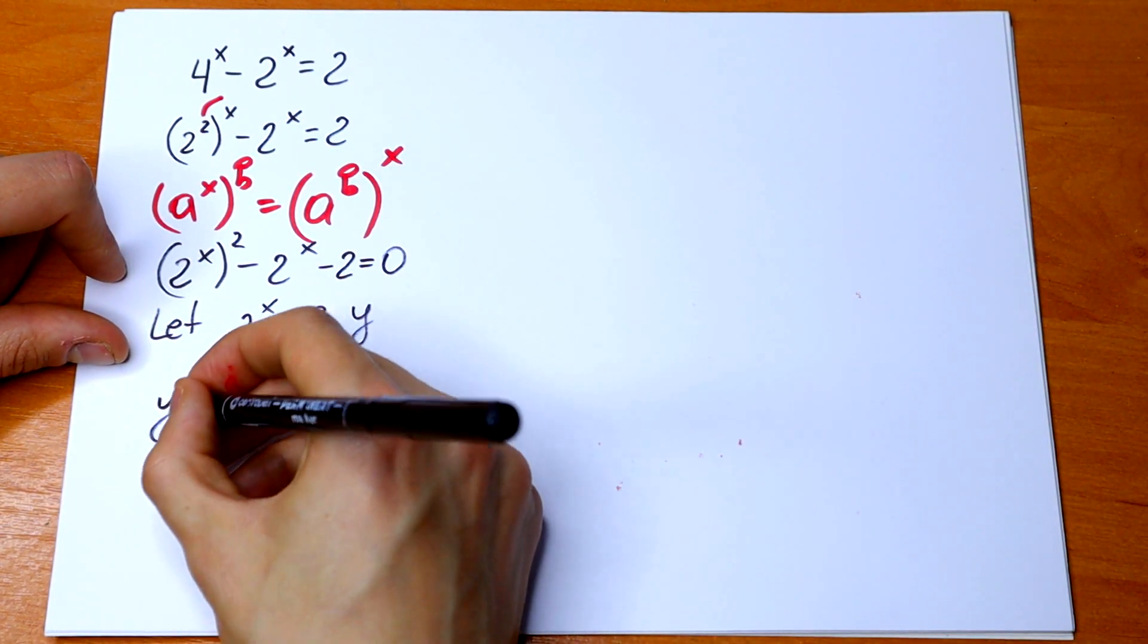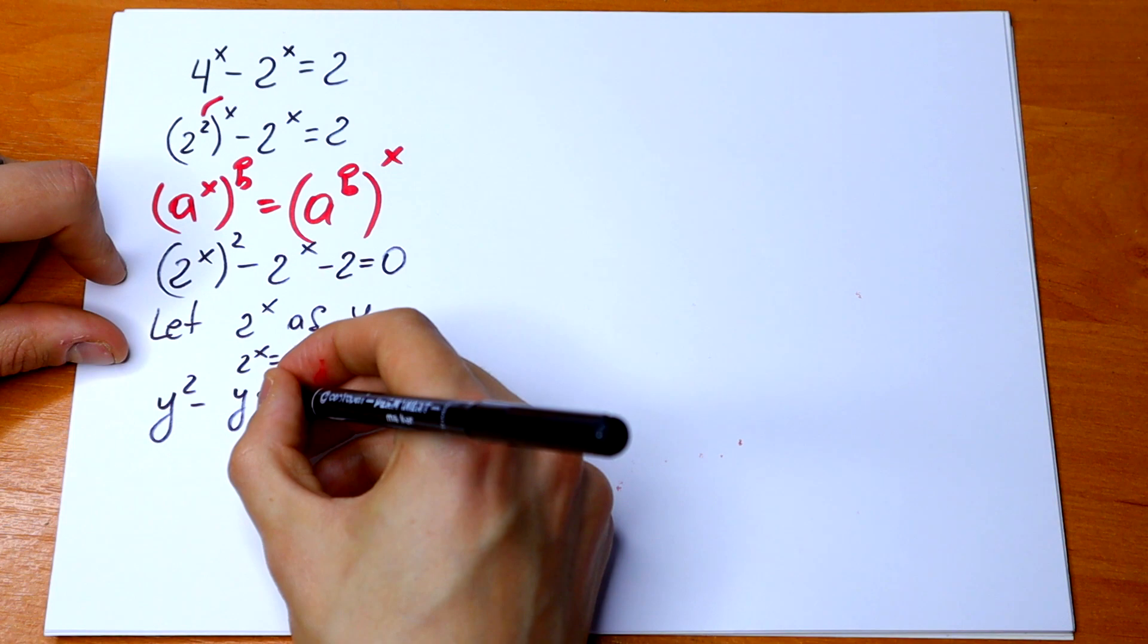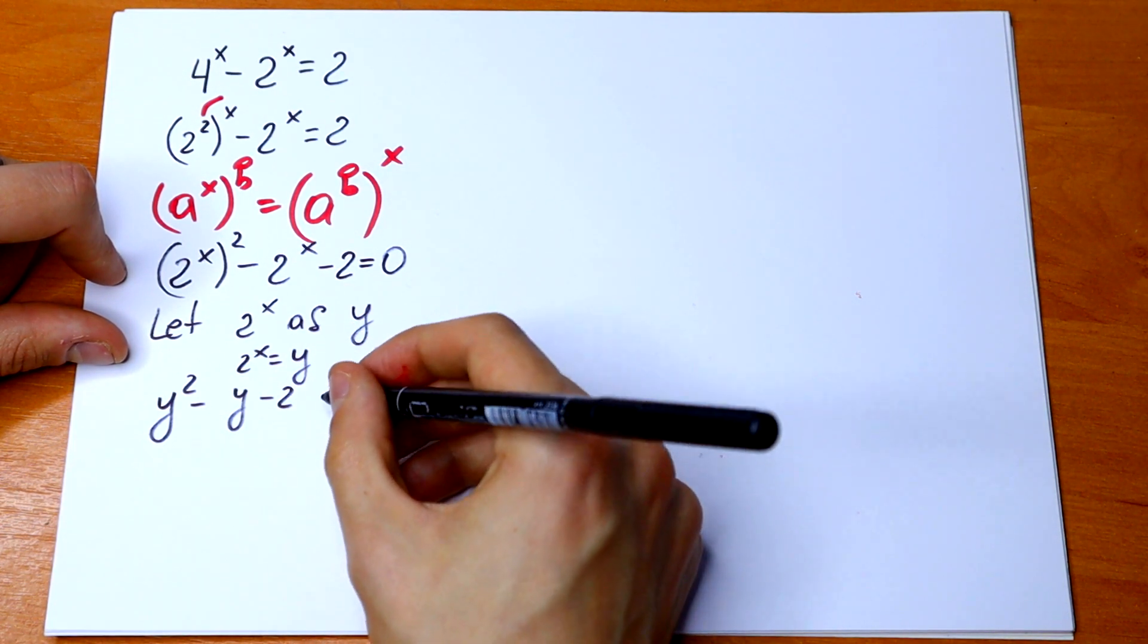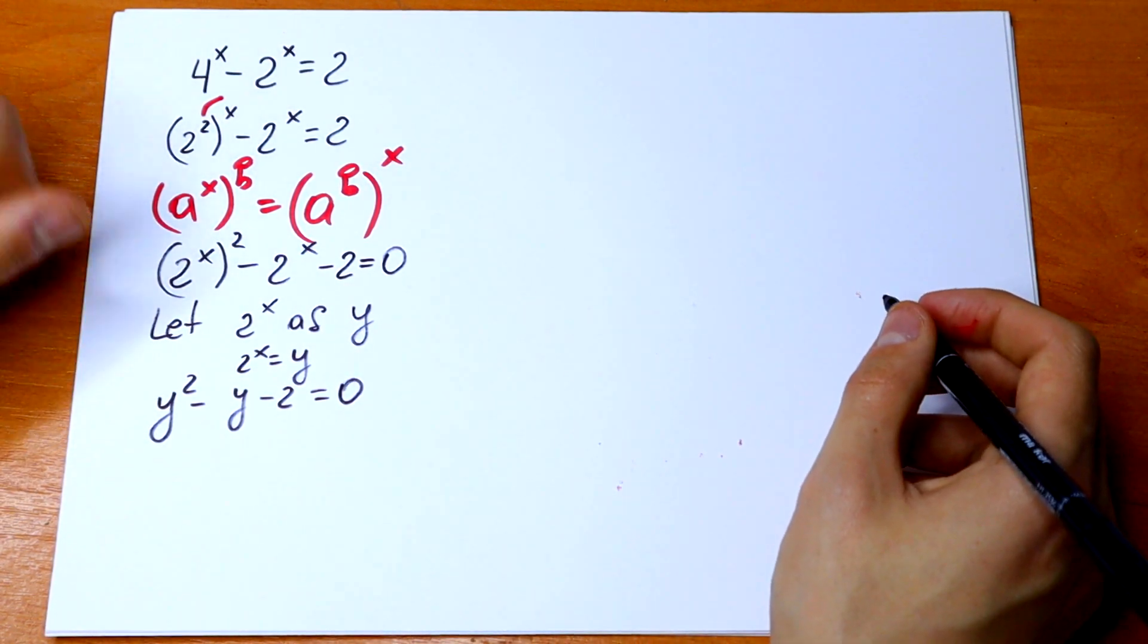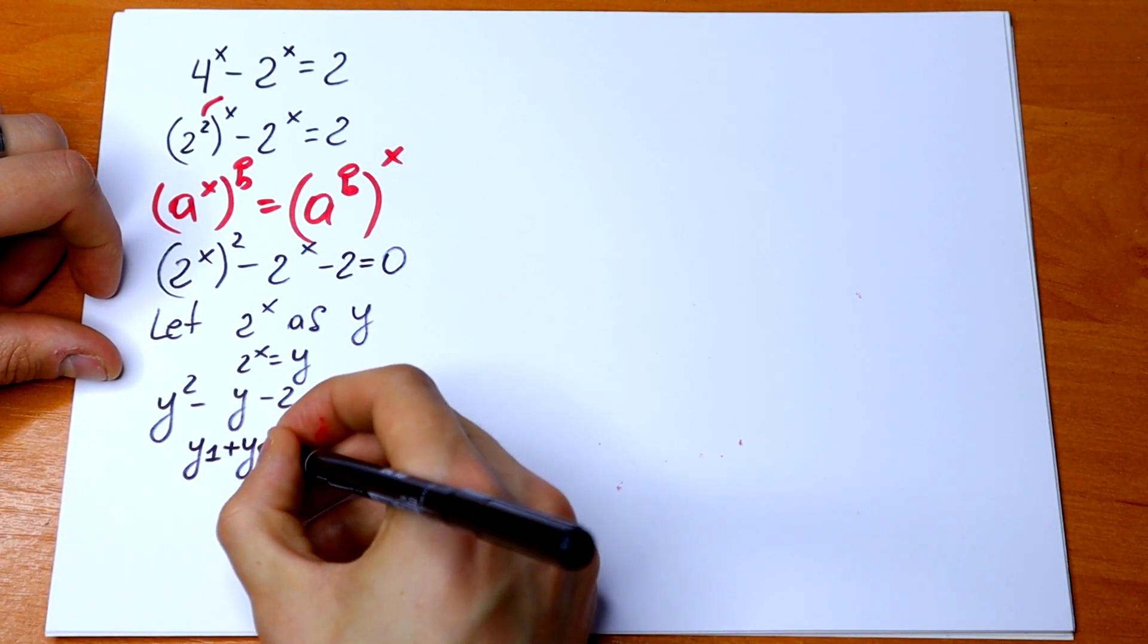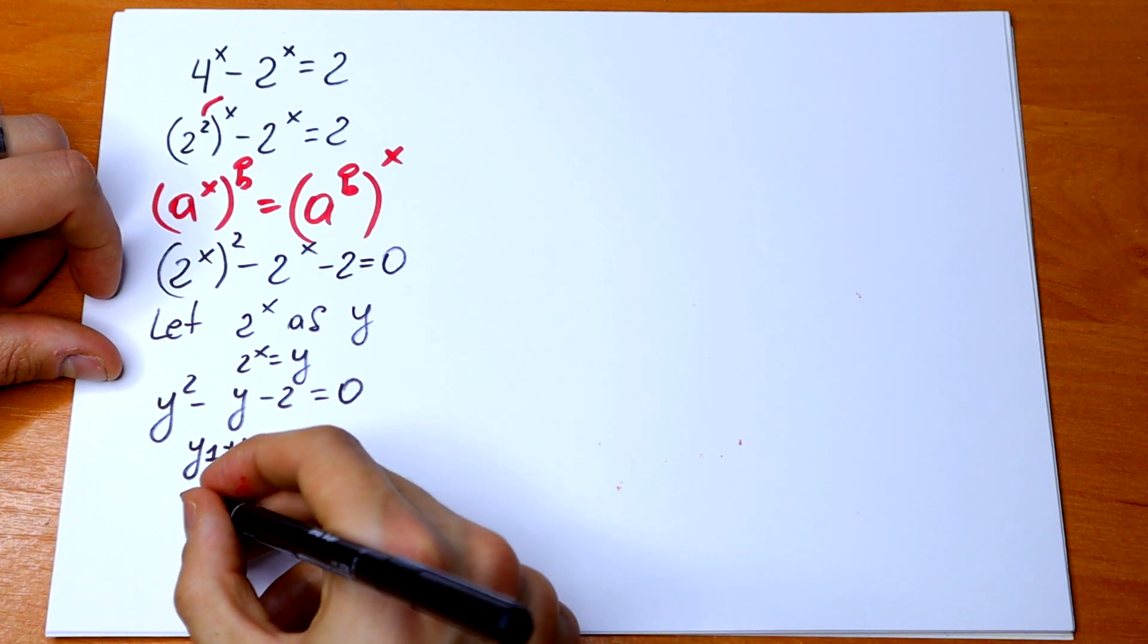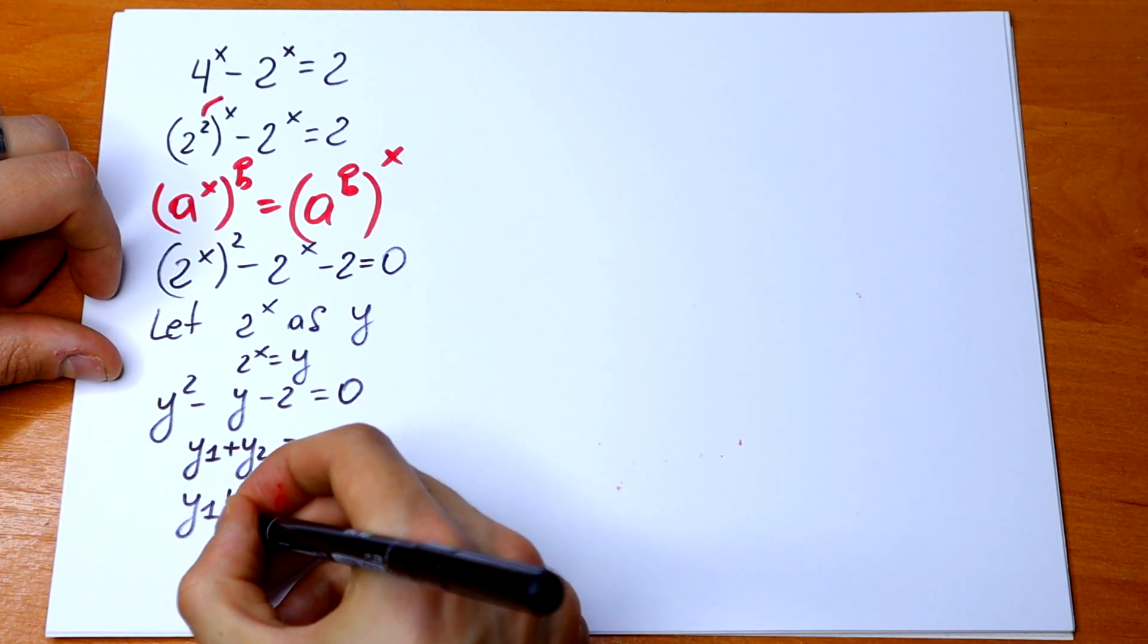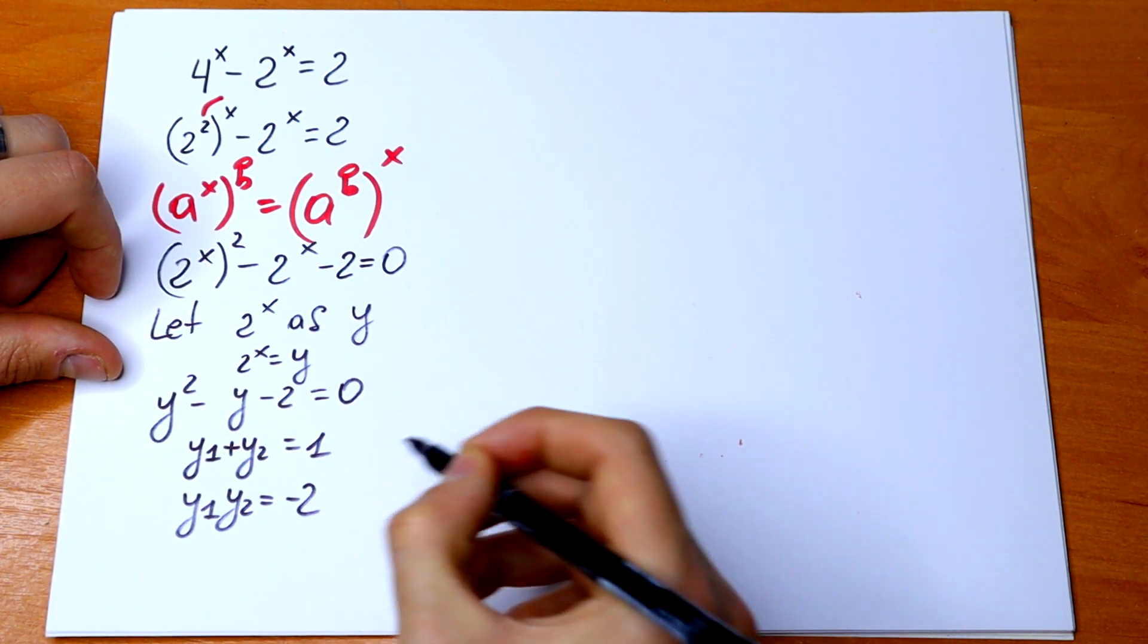We will have y² - y - 2 = 0. By Vieta's formulas, y₁ + y₂ = 1 and y₁ × y₂ = -2.